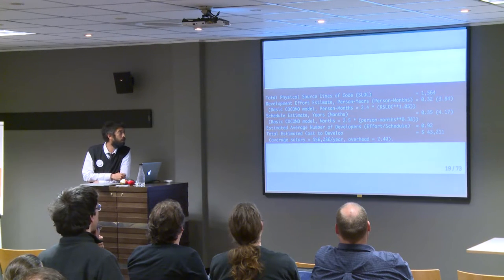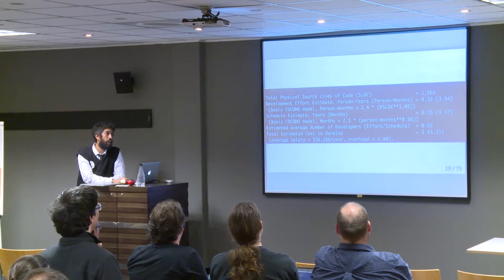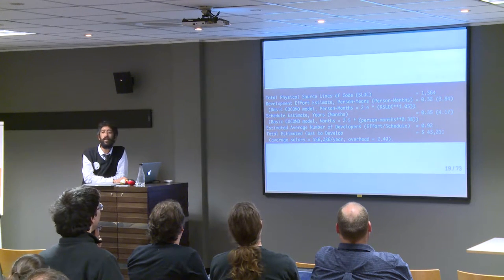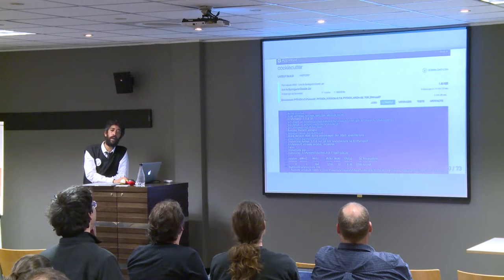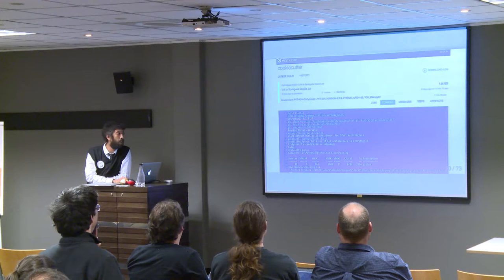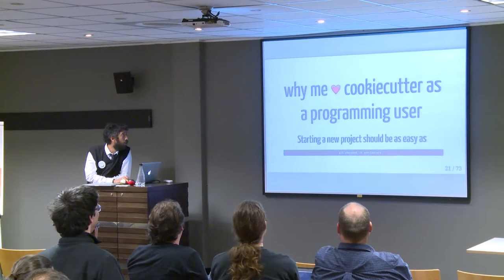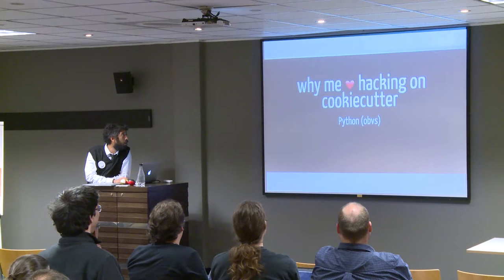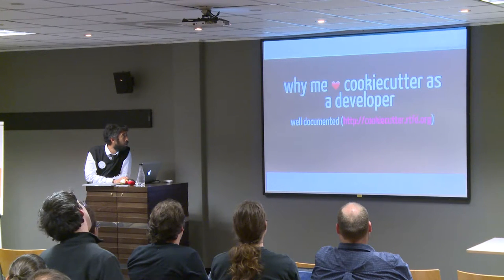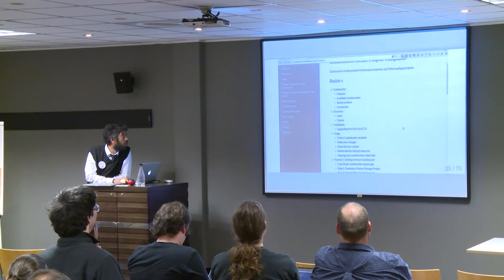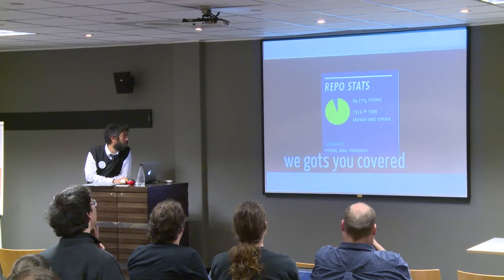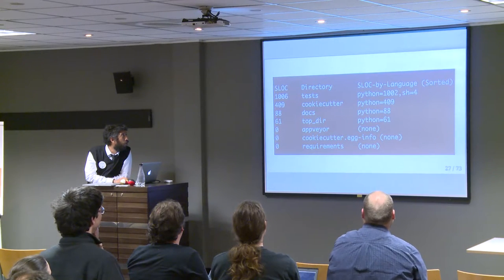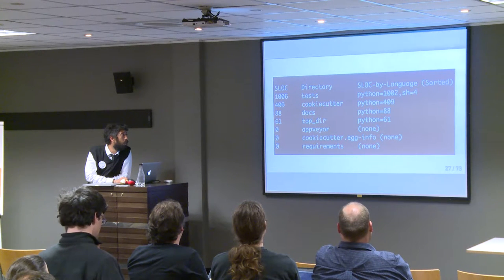CookieCutter is a reasonably small project — 1,500 lines of code — and that's kind of a feature. We make a conscious effort to keep the scope small and targeted. We are inclusive from a technology point of view. We support Python 2 and 3 and Windows, which is pretty rare in Python modules. Starting a new project should be as easy as making a new Git branch. It's well documented, has awesome code coverage, and a pretty good test-to-actual-code ratio — about 2 to 1.